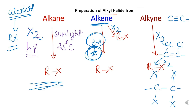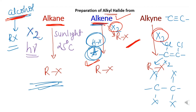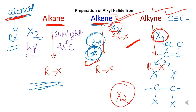So far we have seen preparation of alkyl halides from alcohols, from alkane (halogenation), and from alkene (addition of hydrogen halide). Now the remaining methods are addition of X₂ to alkene, and halogenation of alkyne. Both methods are very simple, direct, and similar, so we will cover them together.